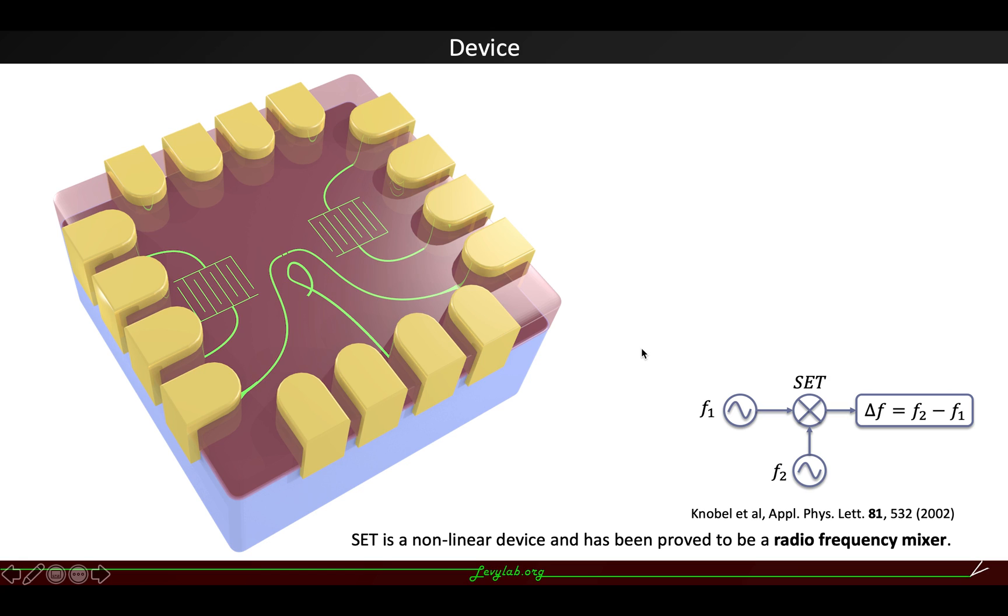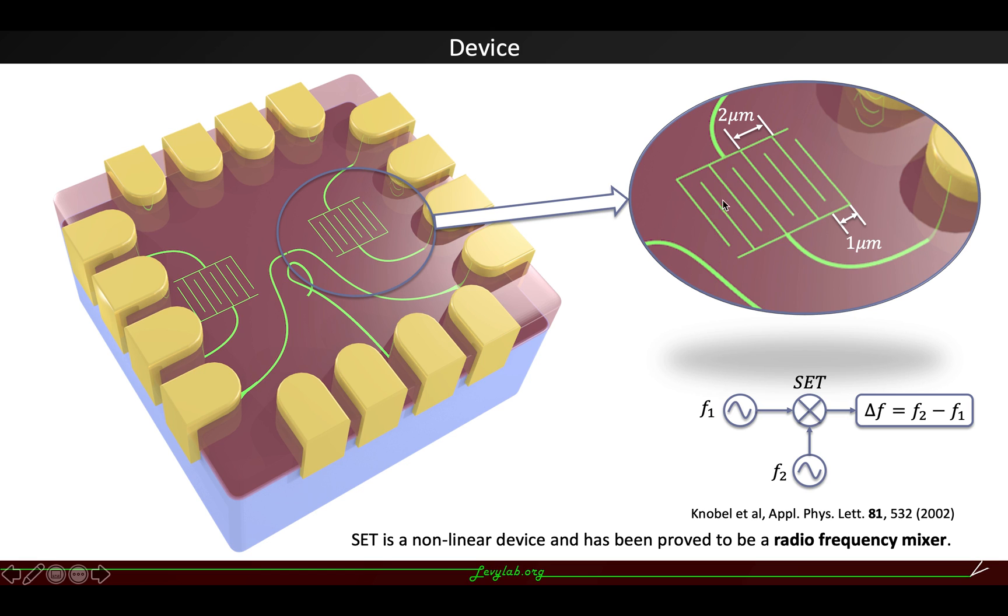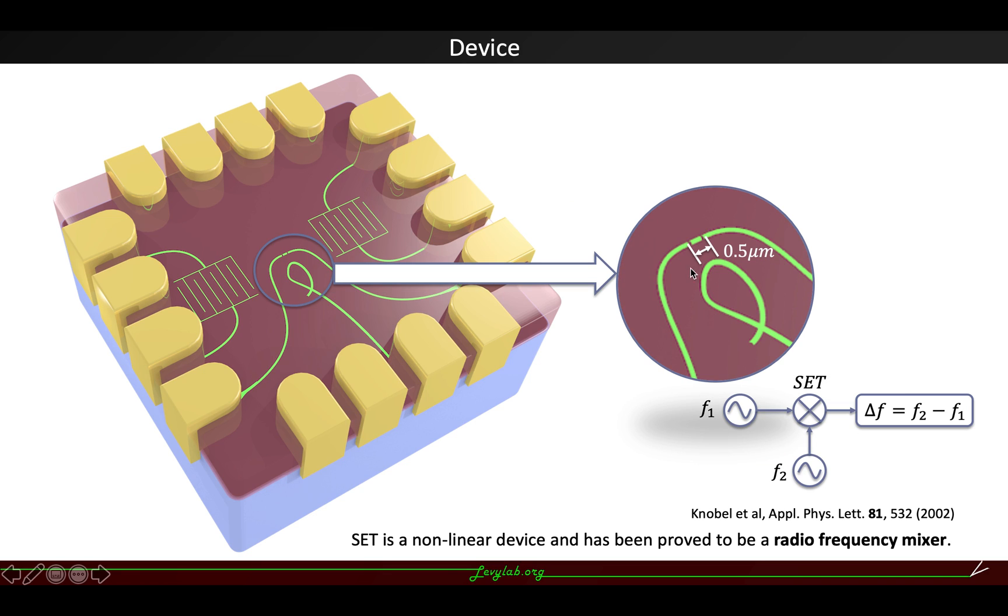The device looks like this. We have the IDT structure with 2 micrometers wavelength, and we have the single electron transistor with 0.5 micrometers barrier distance.